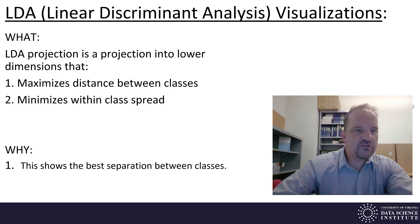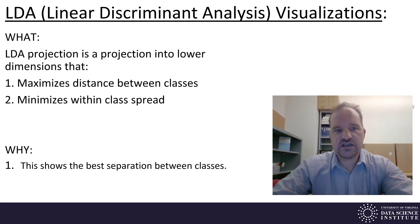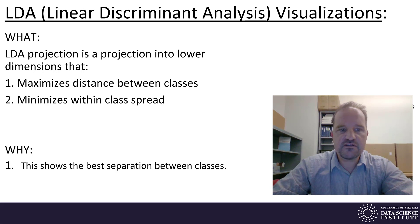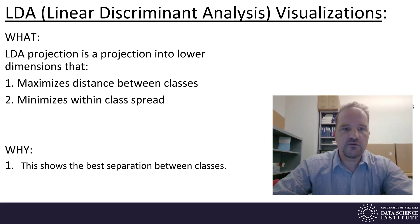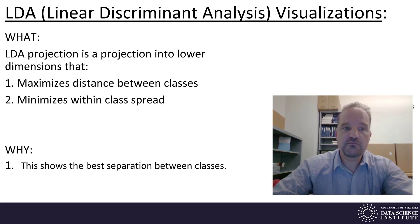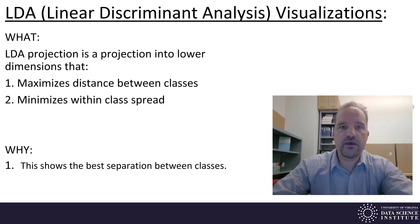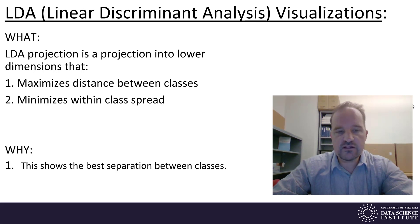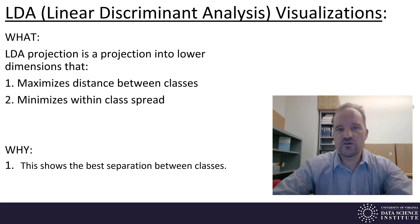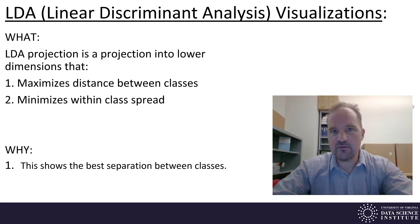What are we going to talk about? We're going to talk about this LDA projection, which is a projection into lower dimensions that maximizes the distance between class means but at the same time minimizes the within-class spread. It gives us the best way to view linear separation between classes when we have class labels.